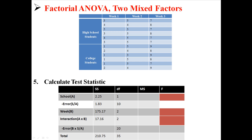Now we're just missing the other error term. We find it easily by taking the total and subtracting everything else: 210.75 minus sum of squares school, minus sum of squares error for school, minus sum of squares week, minus sum of squares interaction. All that's left over is our sum of squares error for the dependent factor: 14.34.